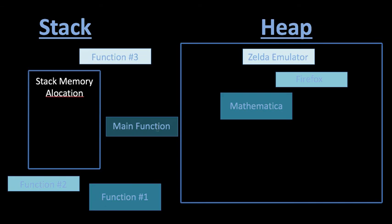So here we have our main function, function 1, function 2, function 3. These are all going to be put on our stack here, and then I'm showing the heap. I'm showing that we have some other programs running - Firefox, Mathematica, a Zelda emulator. They're using some memory from the heap. These programs would also have their own stack as well, but these are the resources they're using on the heap.